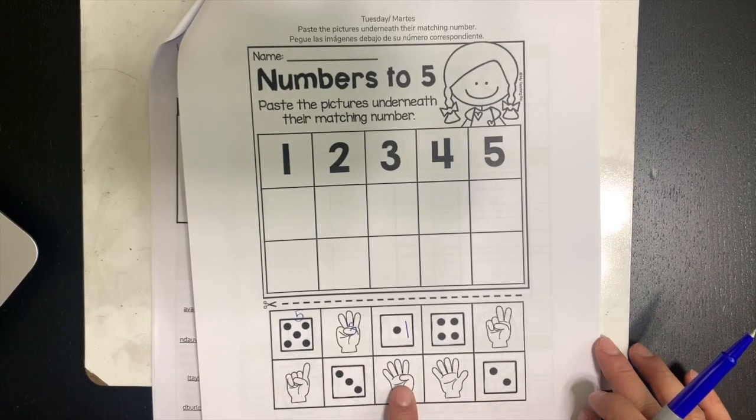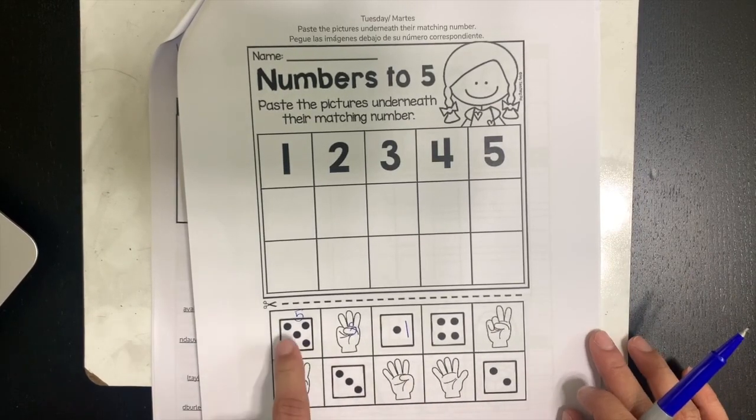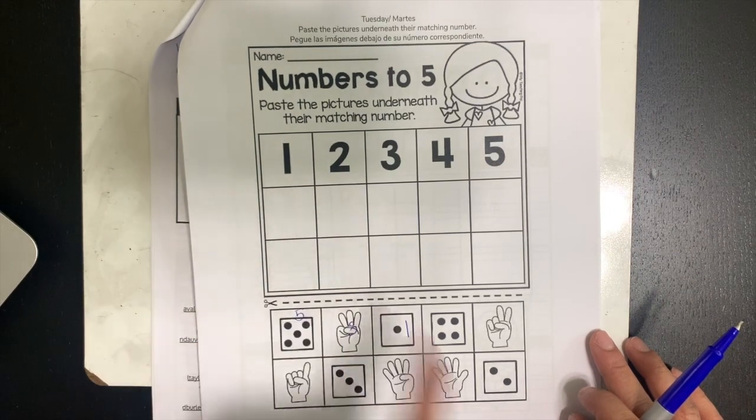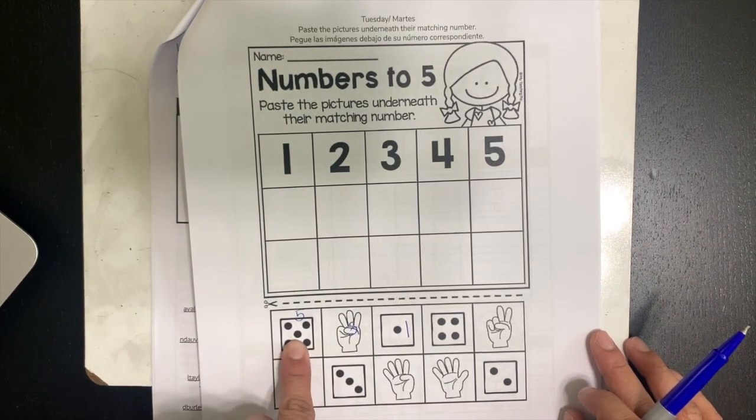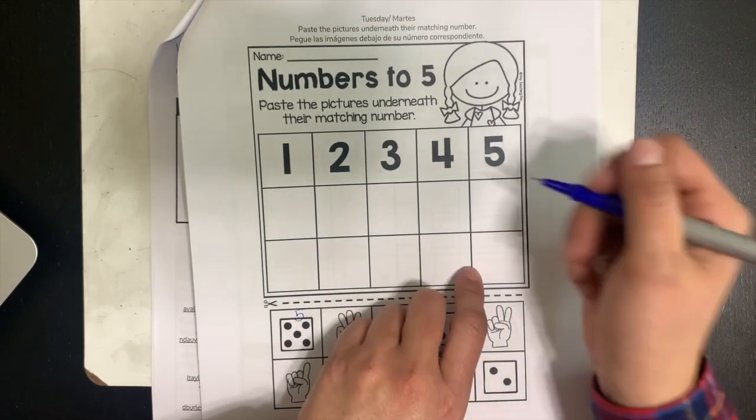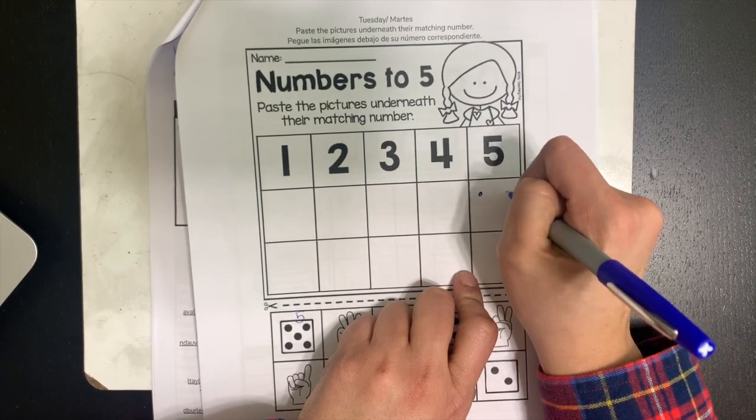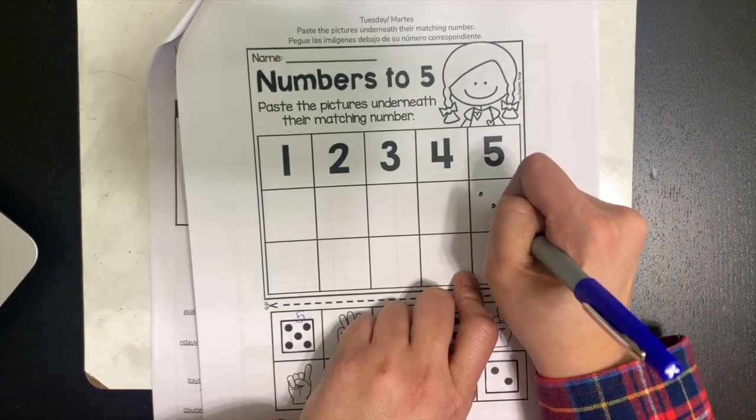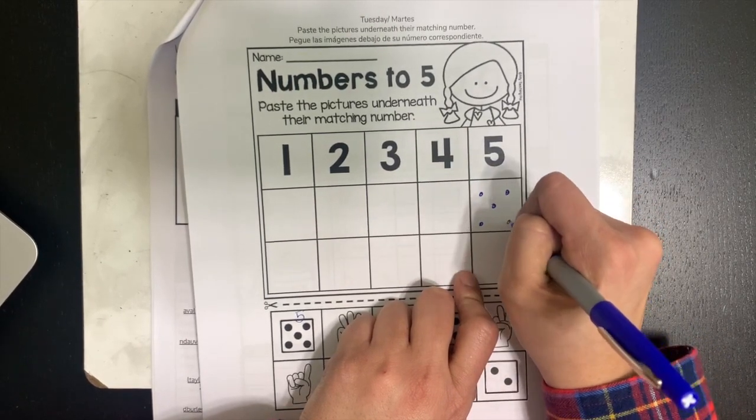Now that we've written all the numbers on here, we're going to go ahead and match them to the number that they belong with. So I see that this first one is 5. So I'm going to draw the same picture here on the first box under 5. 1, 2, 3, 4, 5.